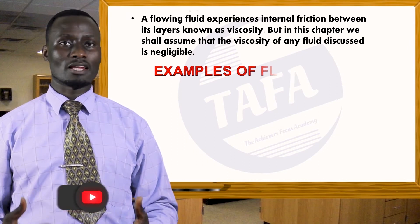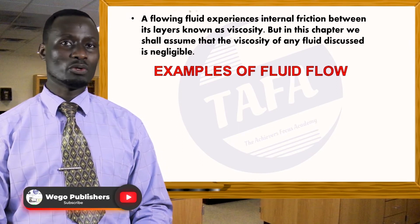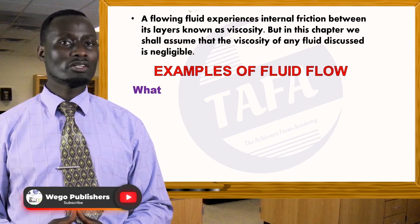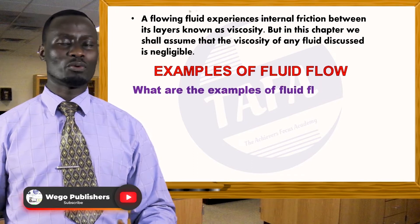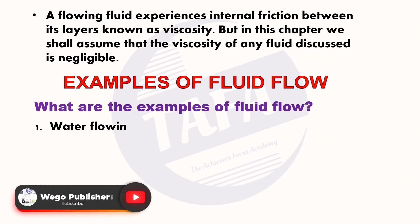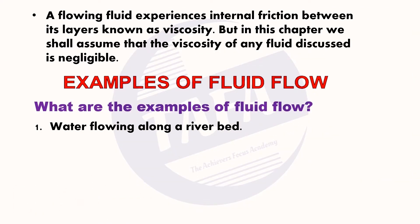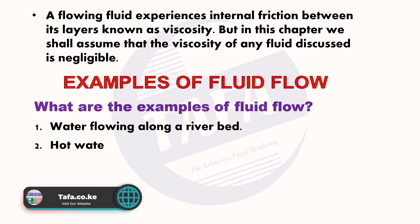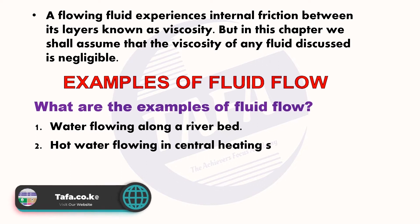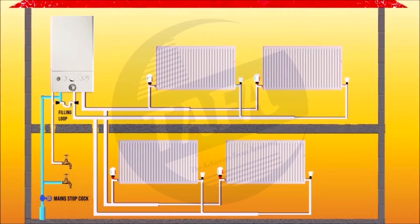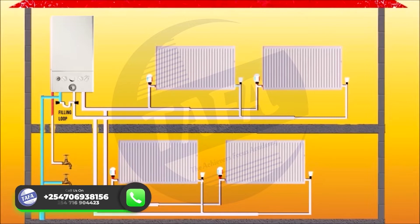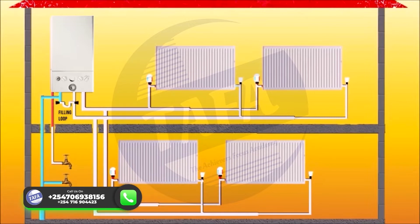Let's now look at examples of fluid flow. Number one, water flowing along a riverbed or in a river is an example of fluid flow. Number two, hot water flowing in central heating systems, like what we learnt in the heat transfer topic in Form 1 under convection currents.